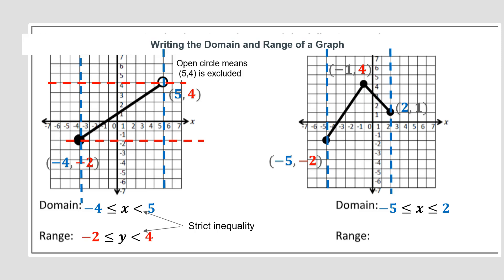Let's look at the range. The minimum point is (negative 5, negative 2), so y values start at negative 2. The highest point on the graph gives a y value of 4. Since everything is included, the range is: y is greater than or equal to negative 2 and less than or equal to 4.